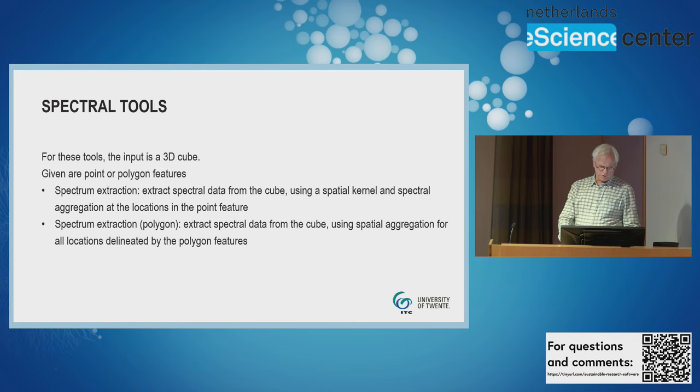Some interesting tools that are used by some staff are spectrum extraction, and not just spectrum extraction given point or polygon features. If you have a point, you can extract the spectrum on a location but a kernel is used, a spatial kernel is used and within that spatial kernel the spectral information is aggregated. So it's not done spatially but spectrally. Something similar is done with, if you have a polygon, only then you don't have a kernel but you already have your spectra and then there's a spatial aggregation used.